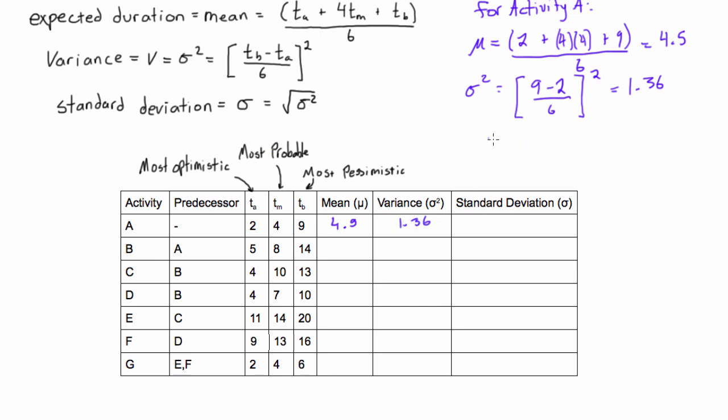And then standard deviation, literally just take the square root of that, and you will get a value of 1.17, there you go. All right, so we would put that in for activity A.